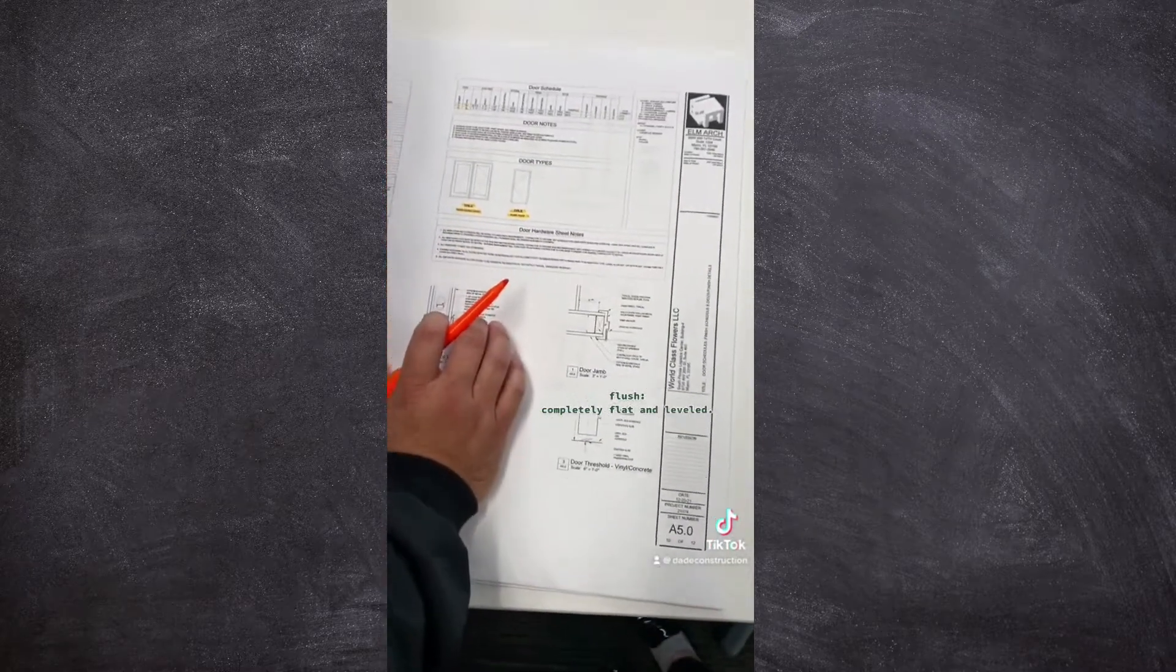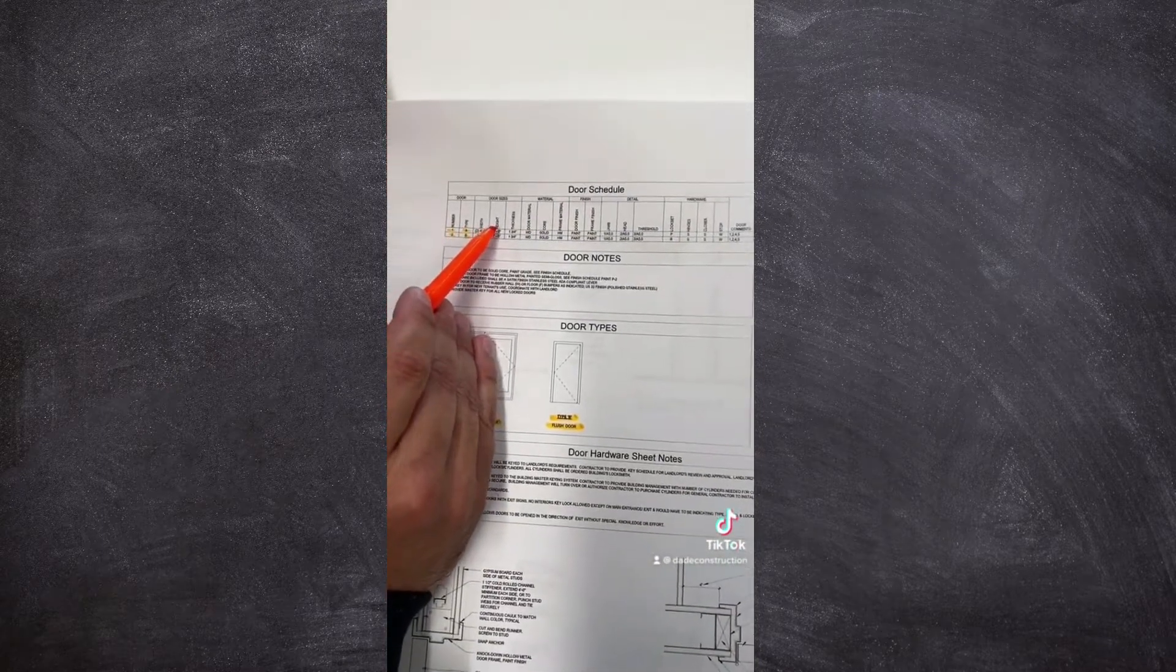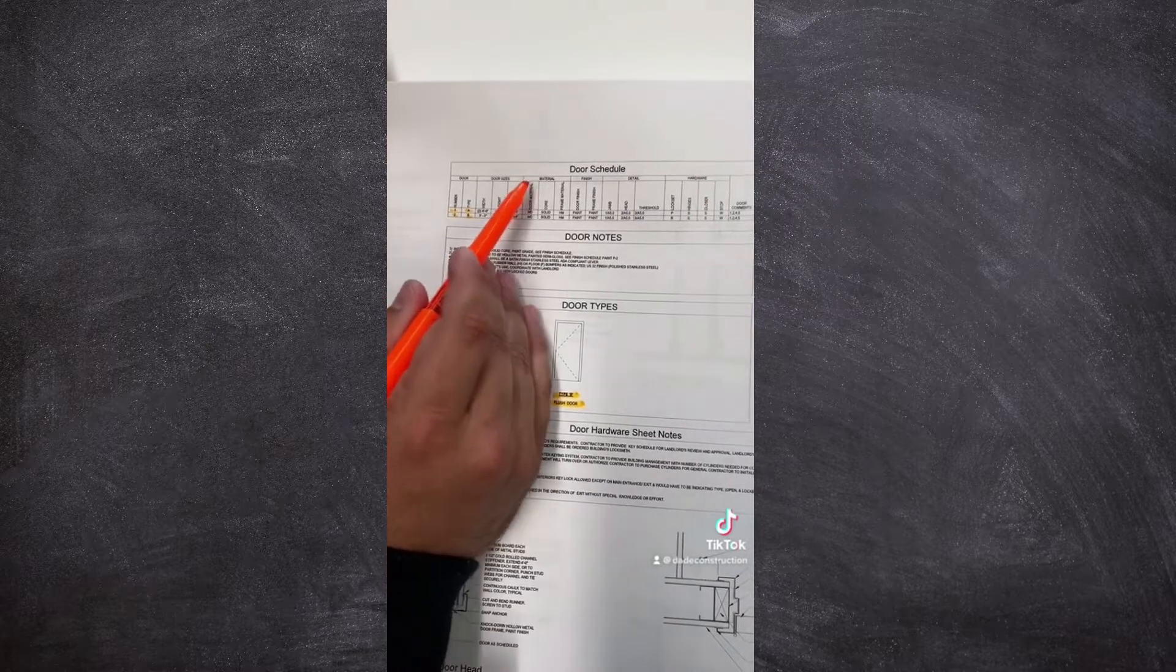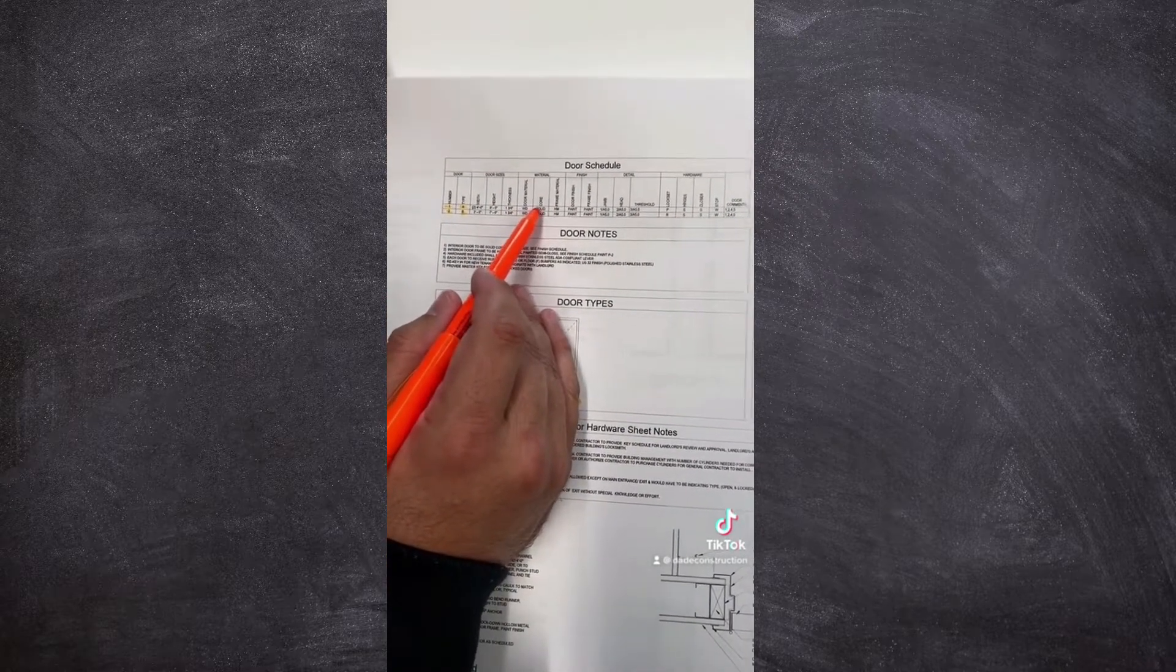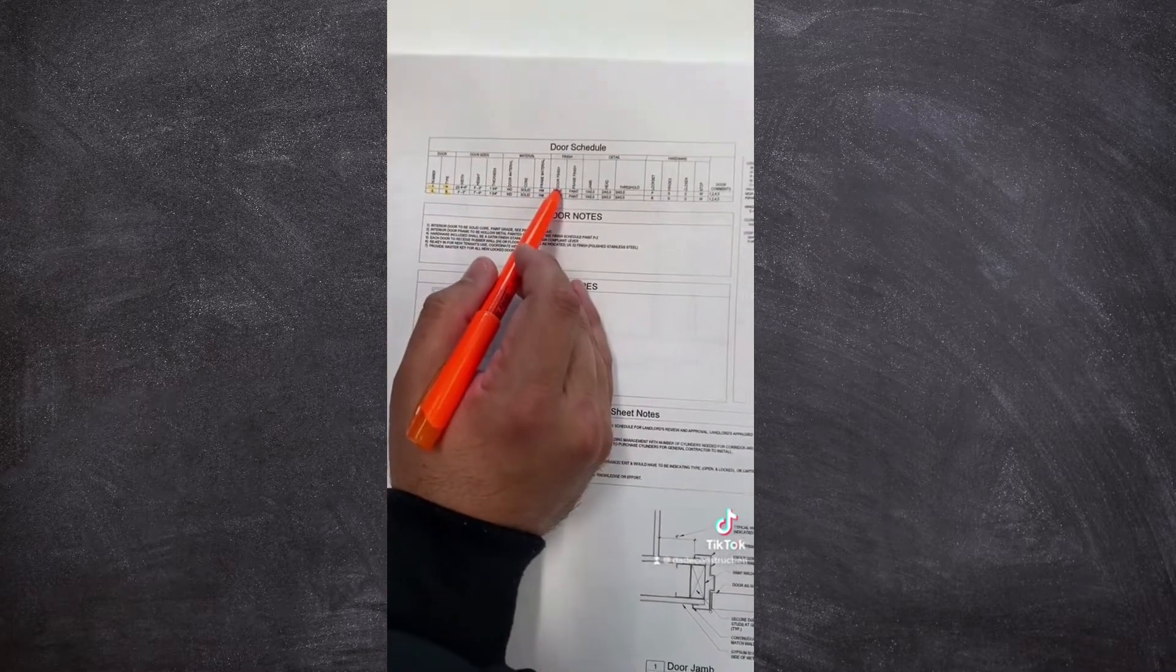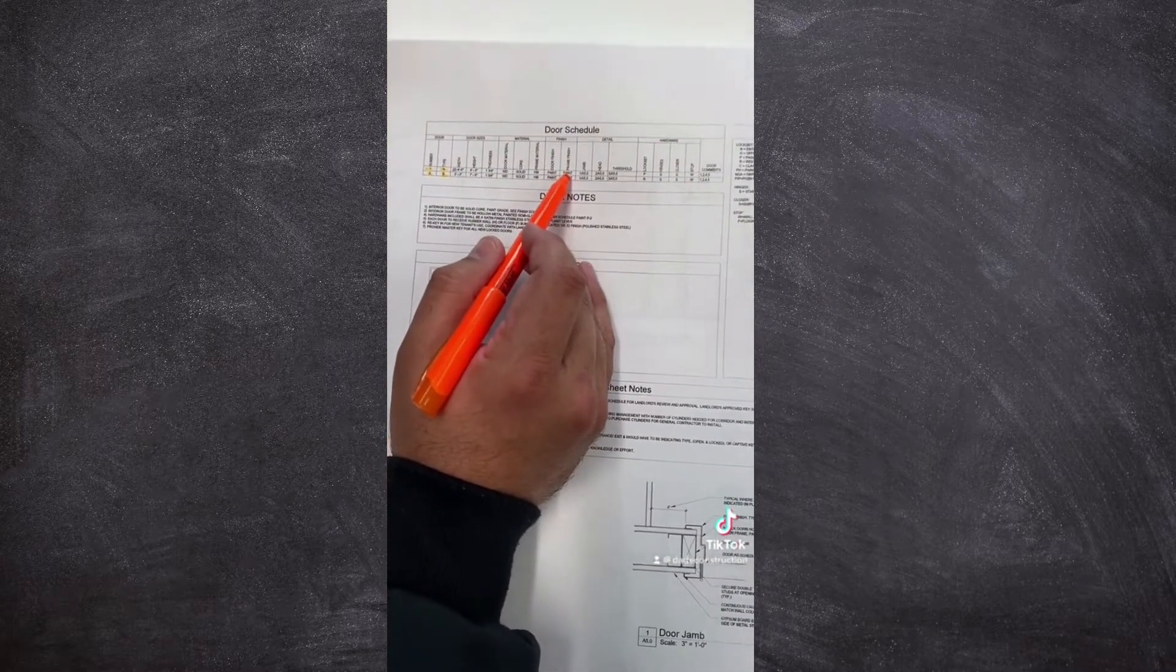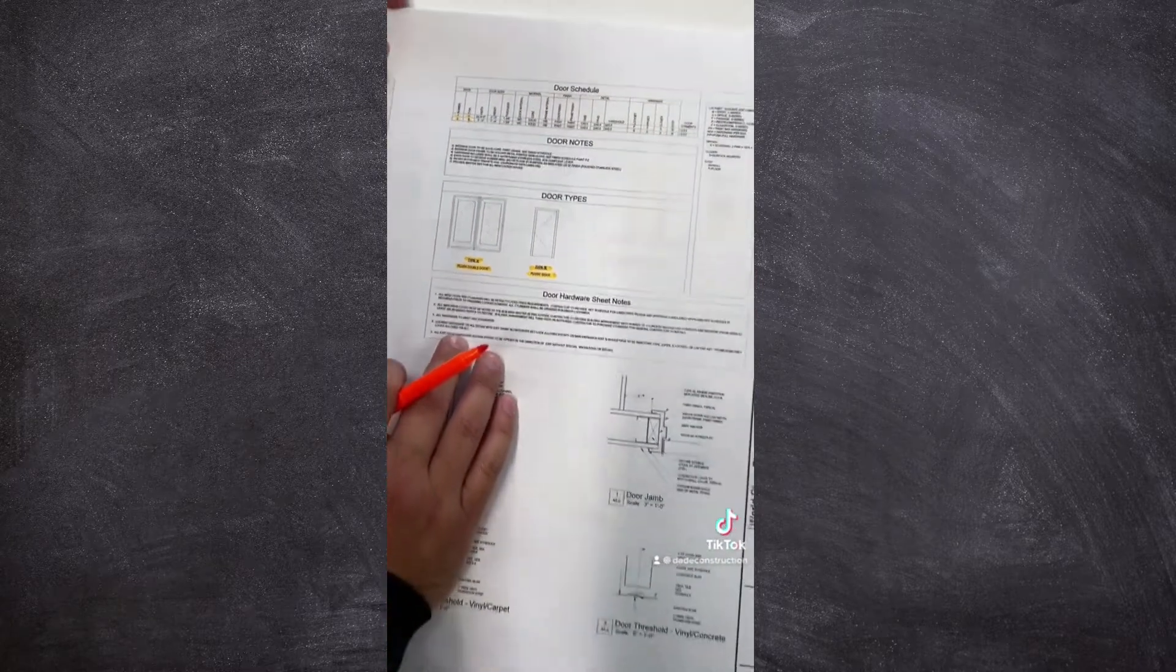Let's read the schedule a little bit together. It talks about the width of the door, the height of the door, the thickness of the door, the material - WD stands for wood, the core is solid, the frame - HM stands for hollow metal. It's going to be painted. The frame is also going to be painted and there's a lot more details, but we're going to stick to the basics in today's video.